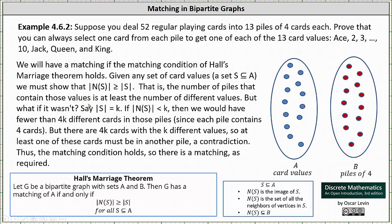But what if it wasn't? Say the cardinality of S is equal to K. If the cardinality of N(S) is less than K, meaning not greater than or equal to K,